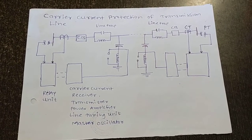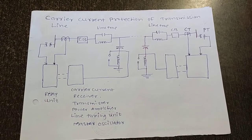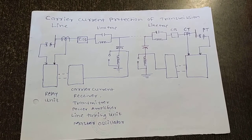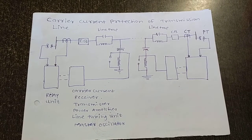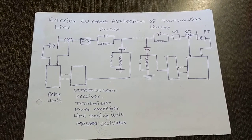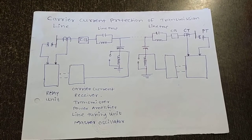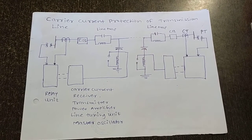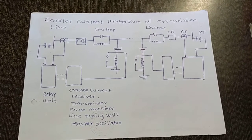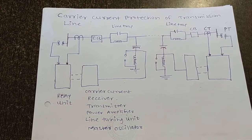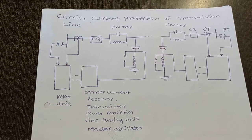The fourth element is the receiver. The receiver receives carrier current from its local transmitter as well as from the transmitter at the distant end of the transmission line. The receiver then converts the carrier current into a DC voltage, which is used for the operation of the relay. The transmission line is protected by flowing the carrier current through it.